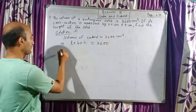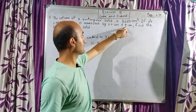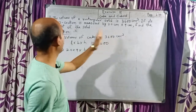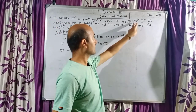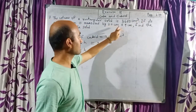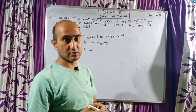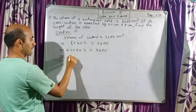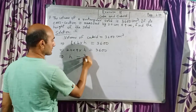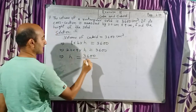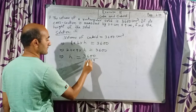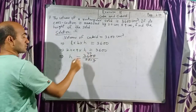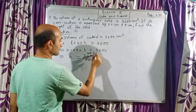Now put the respective values: length is 20, breadth is 9. So 20 into 9 into height equals 3600. The units are matching — volume is centimeter cube and length and breadth are in centimeter — so it's simple. I will write h equal to 3600 divided by 20 into 9. The zeros cancel, 9 fours are 36, so we get 40, and 2 twenties of 40 gives the final answer.